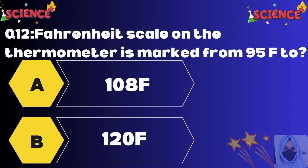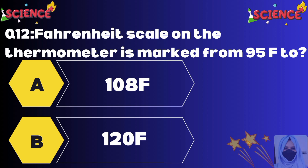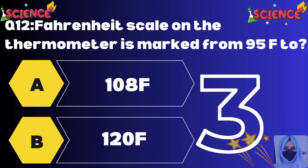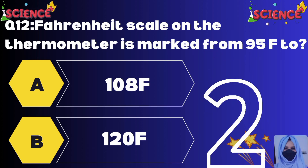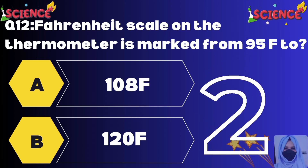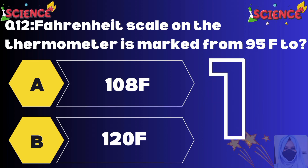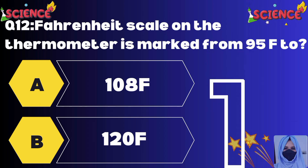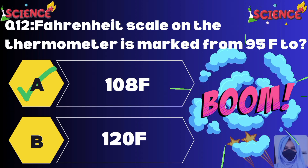The Fahrenheit scale on the thermometer is marked from 95 Fahrenheit to: option A 108, option B 120. The correct answer is option A, 108.